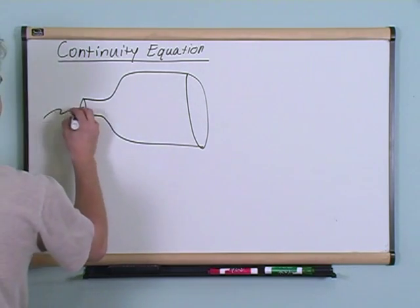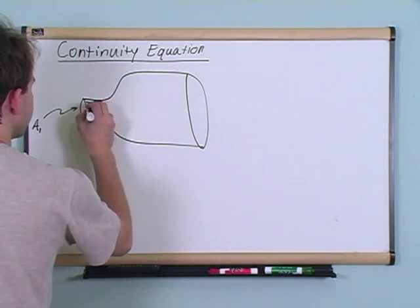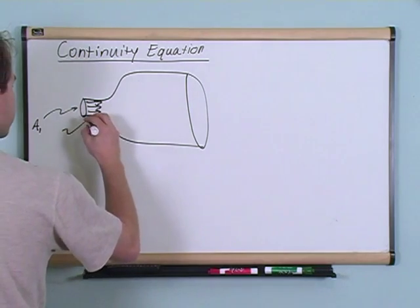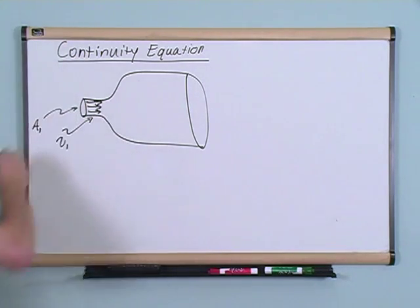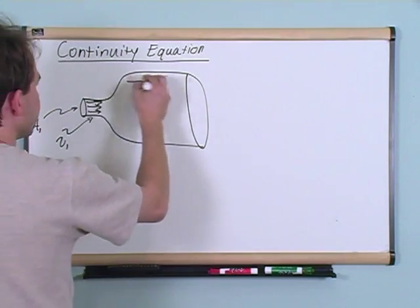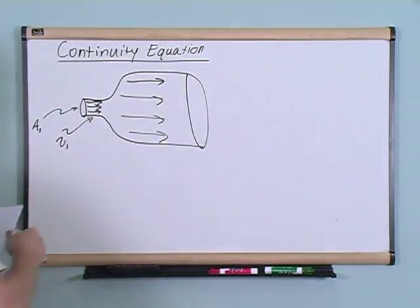Now, obviously here, you're going to have some cross-sectional area A1 and you're going to have velocity of some fluid going in. And you're going to have the velocity V1 going in. Now, obviously that flow is going to spread out here and it's going to do something like this.